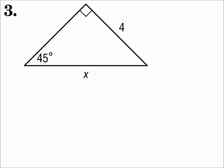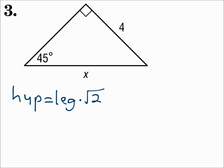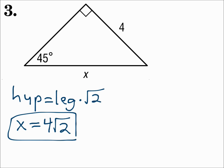Number 3. Here we have a 45-45-90 triangle. The leg is 4 and the hypotenuse is x. Since we're looking for the hypotenuse, use the hypotenuse equals formula: the hypotenuse equals the leg times the square root of 2. Substituting: the hypotenuse is x and the leg is 4, so x equals 4 square root of 2. Don't punch that into your calculator — give the exact value: x equals 4 square root of 2.